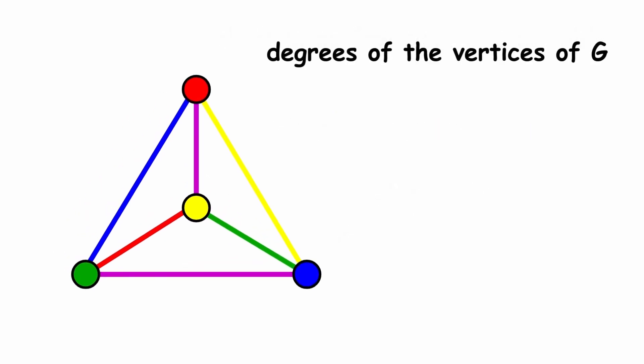Now let's consider the degrees of the vertices of g. As a reminder, a vertex's degree is the number of neighboring vertices it has. The highest degree a vertex of g has is called the maximum degree of g, denoted by delta of g.